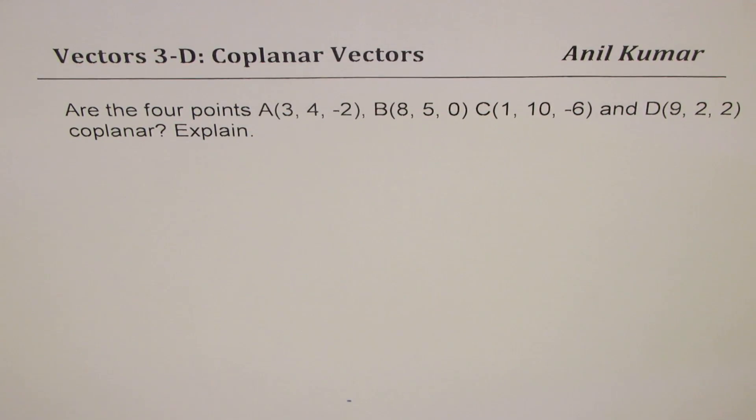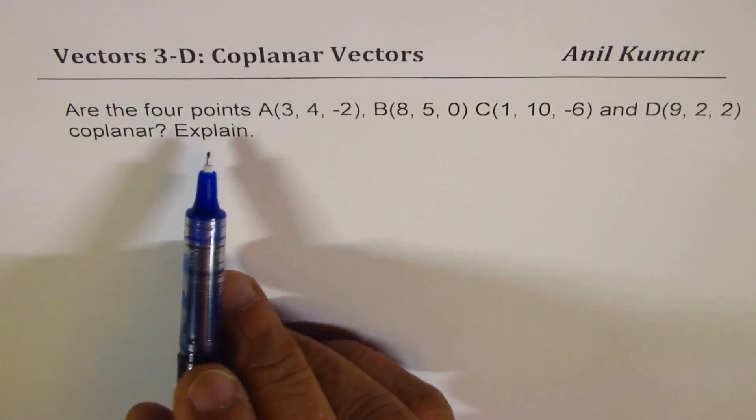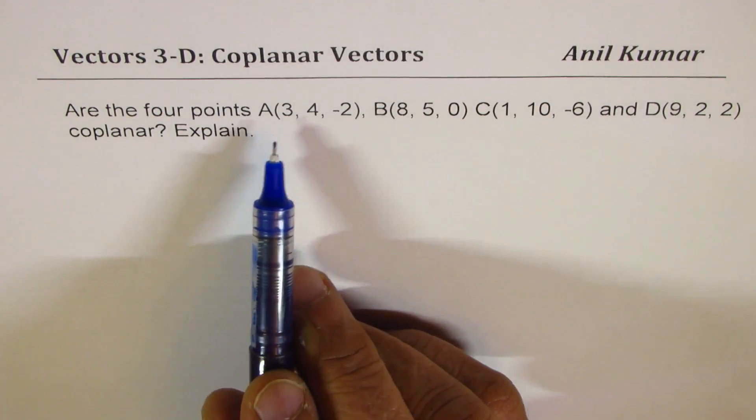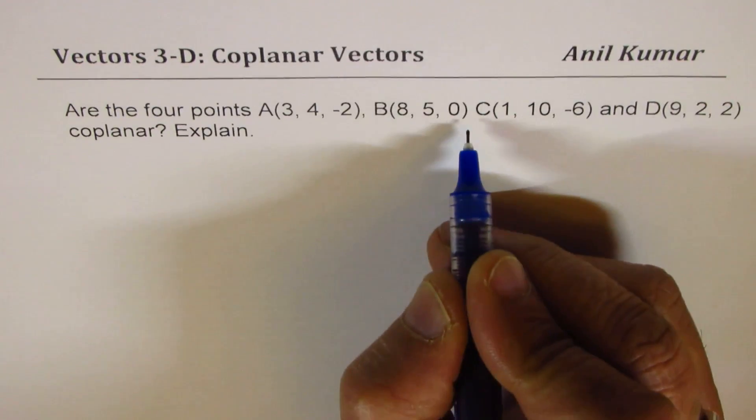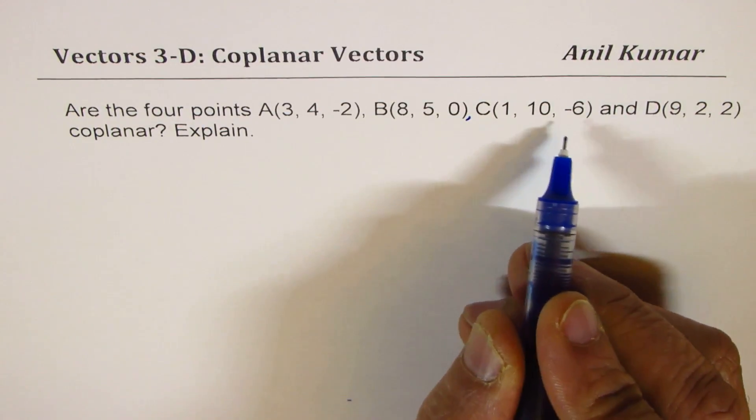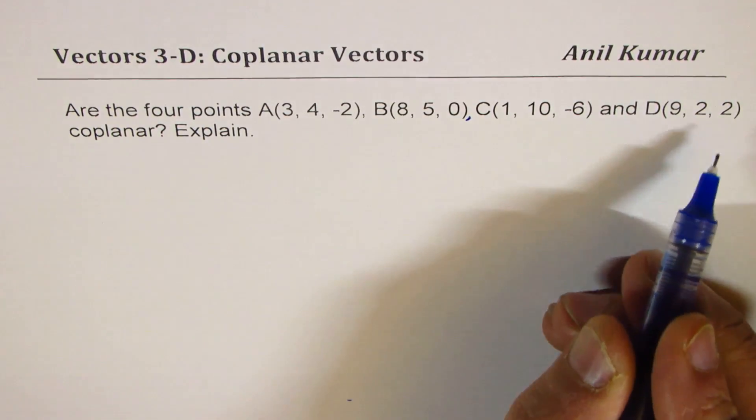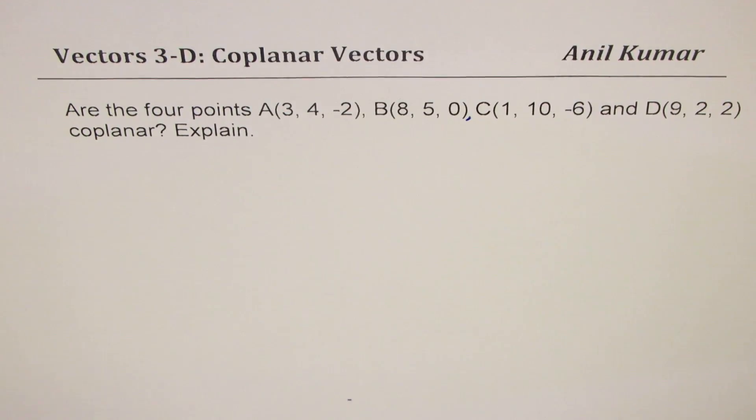I'm Anil Kumar sharing with you another excellent question from my subscriber on coplanar vectors. The question here is: are the four points A(3, 4, -2), B(8, 5, 0), C(1, 10, -6), and D(9, 2, 2) coplanar? Explain.